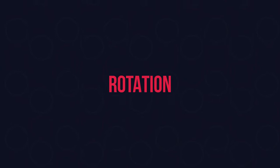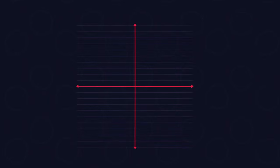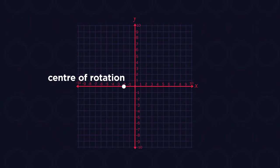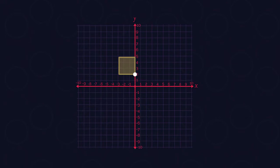Rotation involves turning a shape around a set point. This point is called the centre of rotation. A shape can be turned a quarter turn, a half turn or three quarters of a turn, clockwise or anti-clockwise.